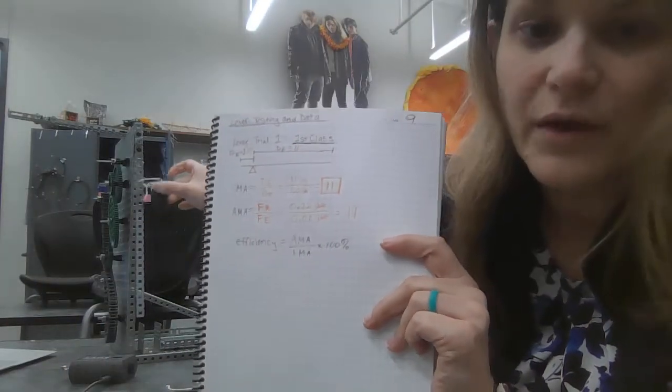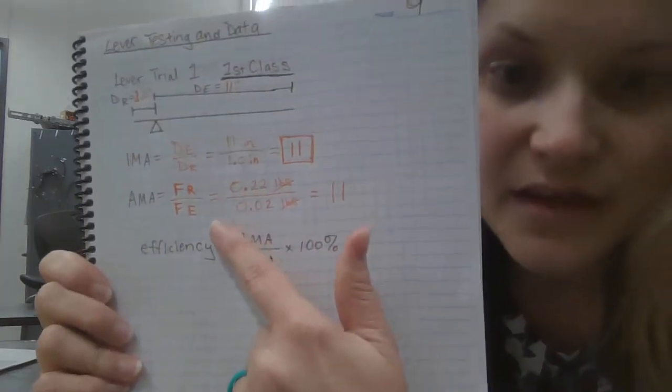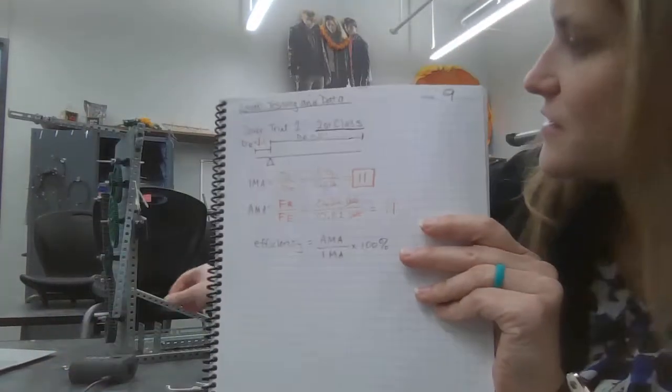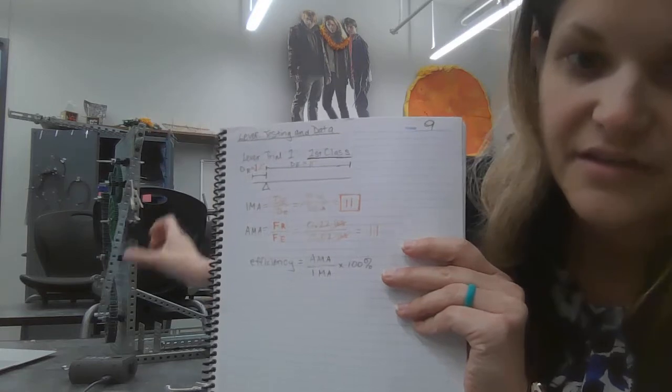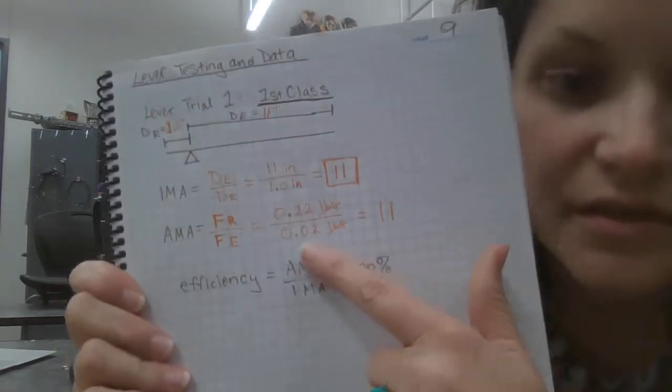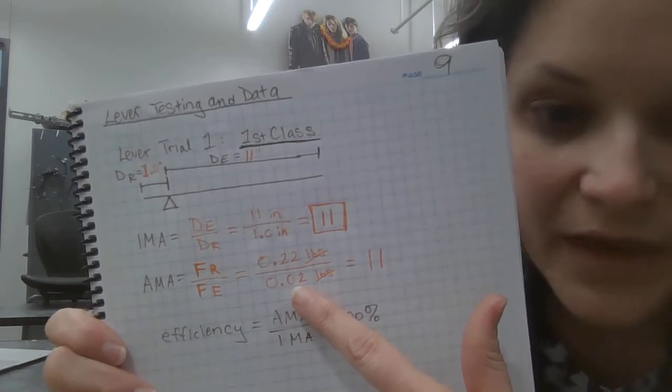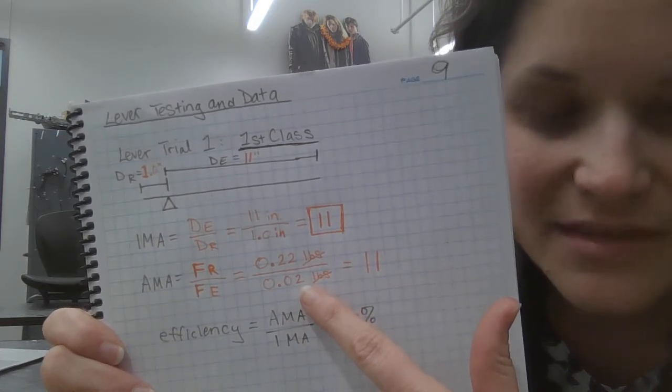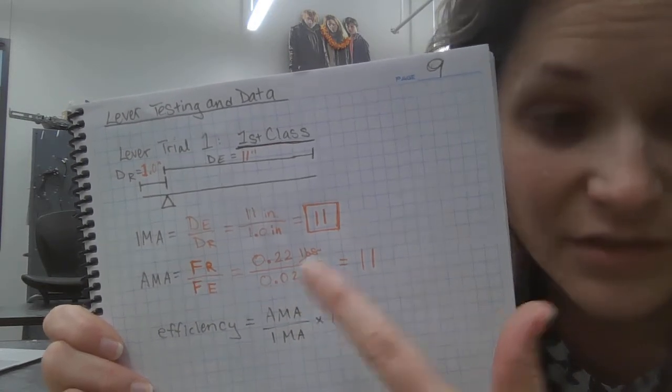That was how heavy my little weight was. And then the effort force, when I was lifting it, it was stuck on this end and we lifted it way all the way out here. It only took 0.02 pounds and that 0.02, that was as precise as we could get. That's only one sig fig.